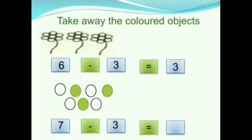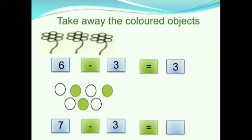Children, here we have circles. How many circles are there? Let us count it. 1, 2, 3, 4, 5, 6, 7. There are 7 circles. 3 circles are colored and 4 circles are not colored. Now we will take away the colored circles. After taking away the colored circles, how many circles are remaining? 1, 2, 3, 4. 4 circles are remaining. So, 7 minus 3 is equals to 4.